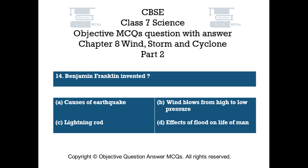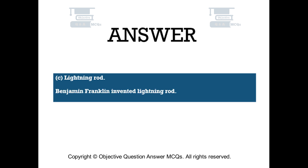Question number 14. Benjamin Franklin invented — Option A: causes of earthquake. Option B: wind blows from high to low pressure. Option C: lightning rod. Option D: effects of flood on life of man. The right answer is Option C: lightning rod. Benjamin Franklin invented the lightning rod.